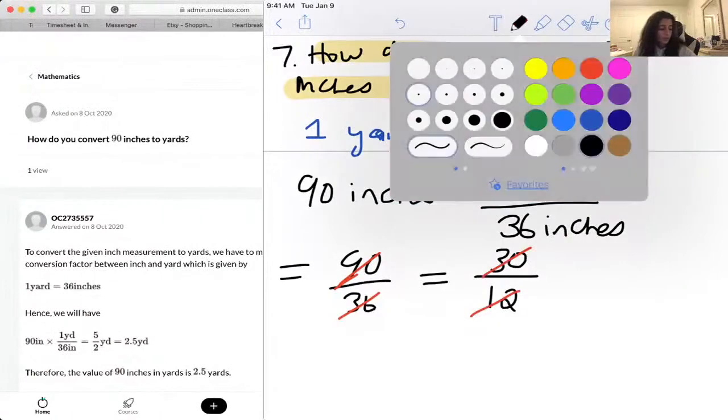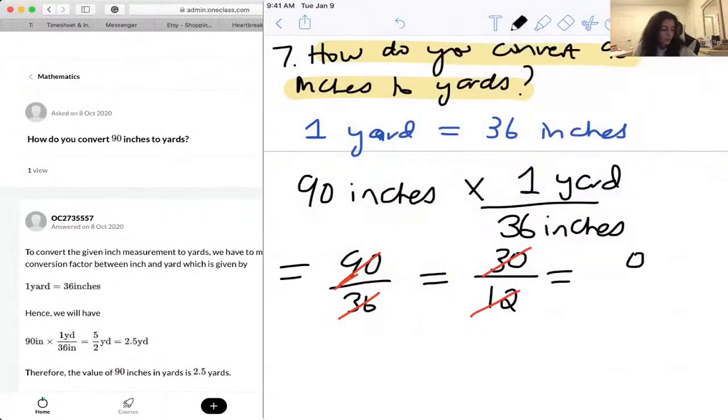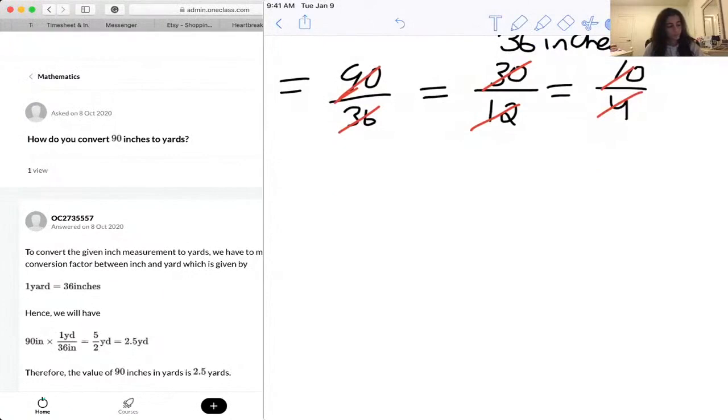And we are left with 10 over... oh sorry, 4. And this can again be divided by 2. 5 over 2 is our final answer, or if you want to put it in decimal form, you can put it as 2.5.